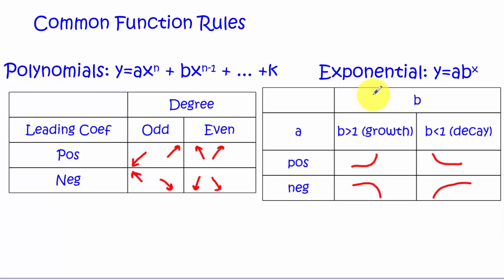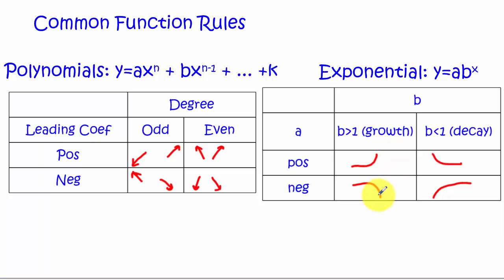We've also explored exponential growth and decay functions. They have a horizontal asymptote, meaning y approaches a finite number. In our last unit, that finite number was zero. On the other side, the function goes to positive or negative infinity. For growth functions where b is greater than 1, the horizontal asymptote is on the left as x approaches negative infinity, and the function goes to positive or negative infinity on the right, depending on whether the initial value a is positive or negative. Decay functions are the reverse.